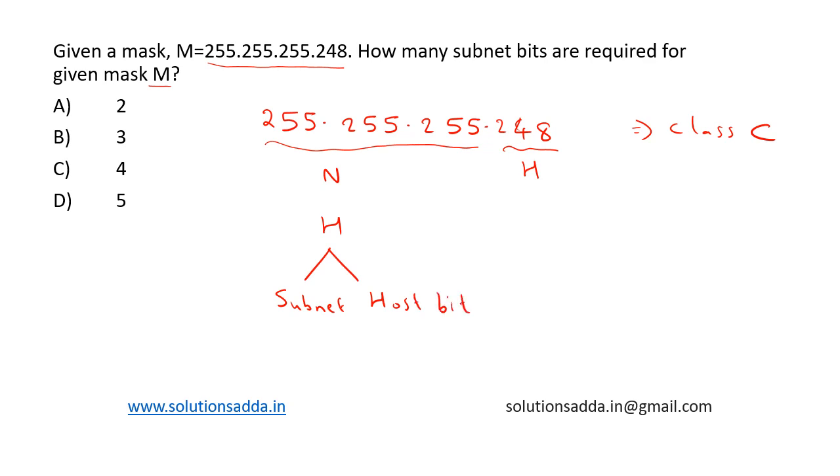So 248 in 8 bits can be represented as 11111000. This is 248 in 8-bit representation. So the last octet is this, and from this we can identify that the number of continuous ones represents the subnet. So we have 5 continuous bits.